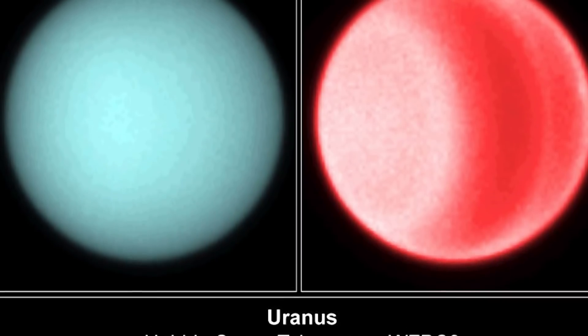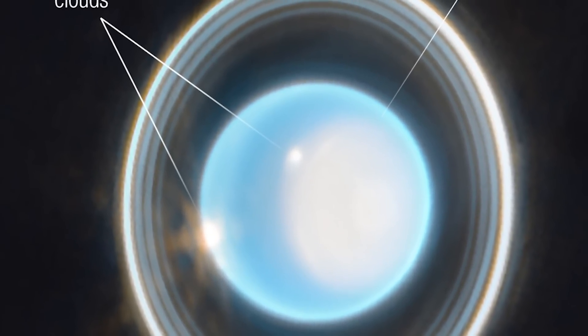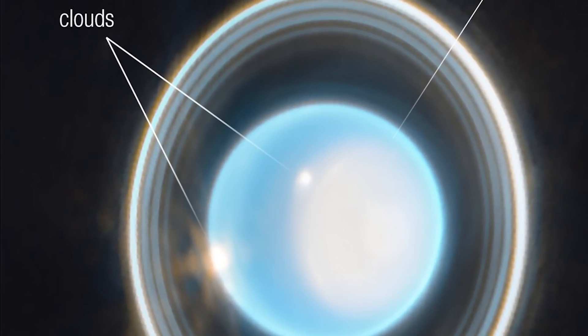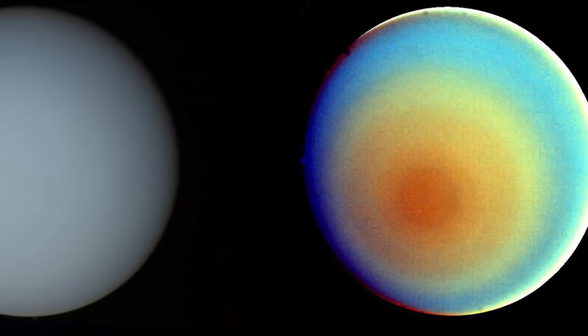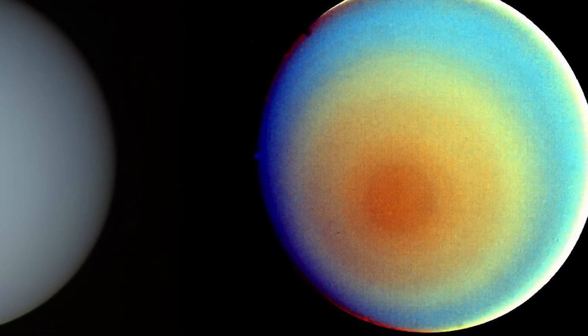At the edge of the polar cap lies a bright cloud, as well as a few fainter extended features just beyond the cap's edge, and a second very bright cloud is seen at the planet's left limb.